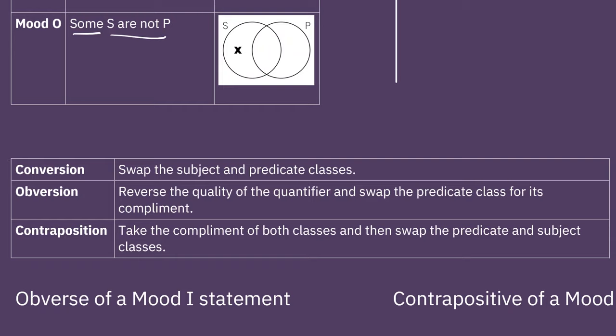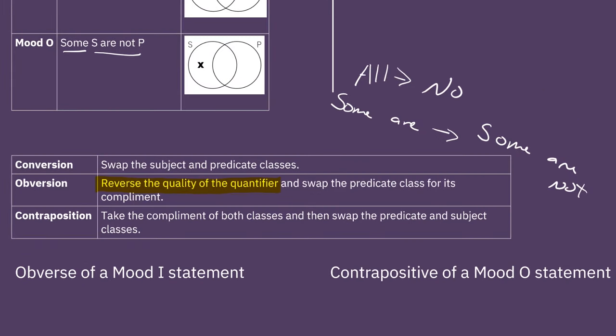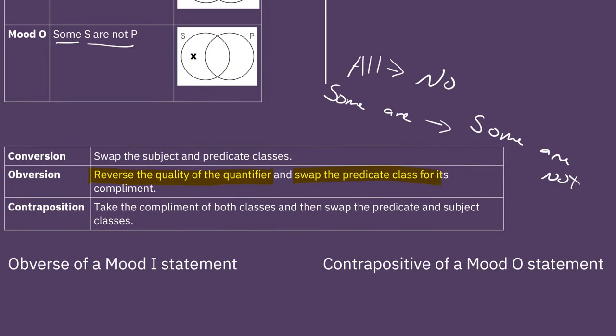But let's see first how we form these things. So let's look at the obverse of a mood I statement. What we're going to end up doing is first we're going to reverse the quality of the quantifier. So we're going to move from all to no, or maybe some are to the opposite, some are not. Then after we do that, the second thing is swapping the predicate class for the complement of the class. And the complement of a class, this might seem a little weird, but all it is is everything not in that class.